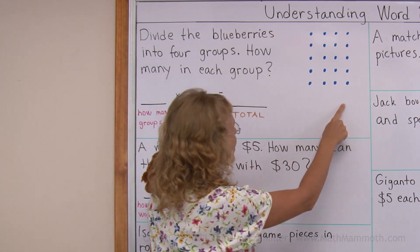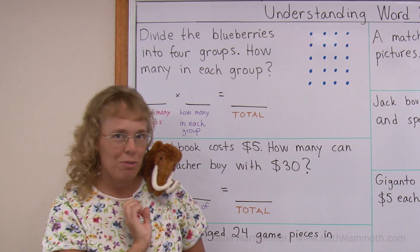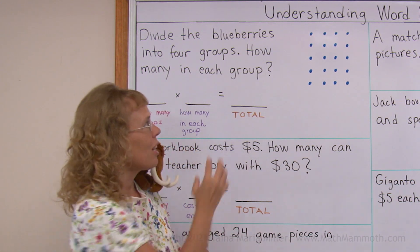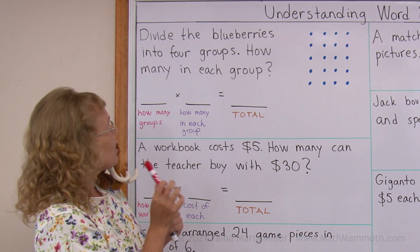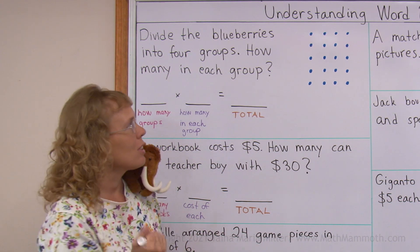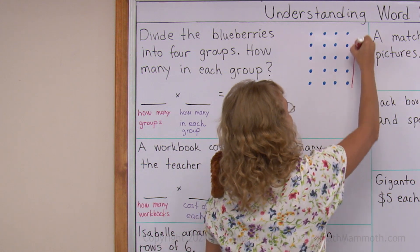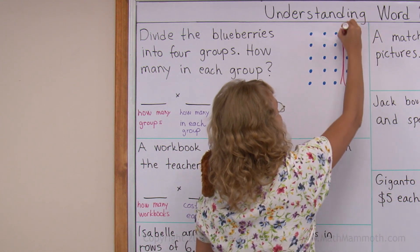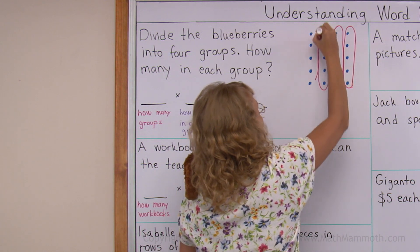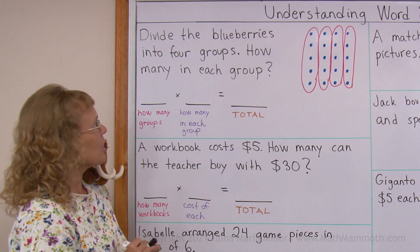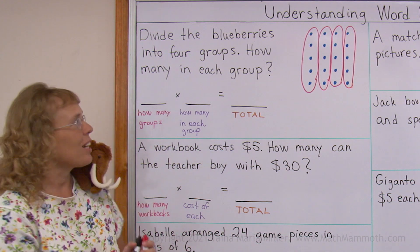And here are the blueberries. You've seen those kind of pictures before in the multiplication lessons. We have rows and columns, and now it says to make or divide those into four groups. So I can do that. It's one group, and the second, third, and fourth. You can see five in each group, right?